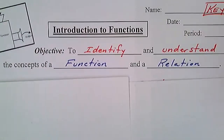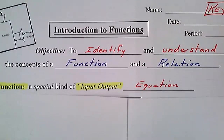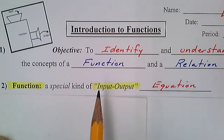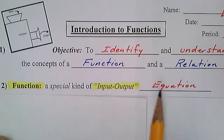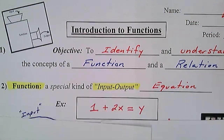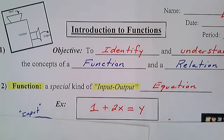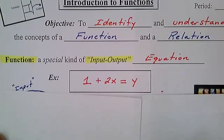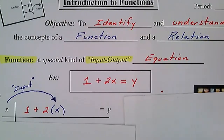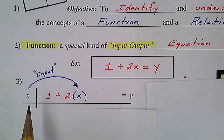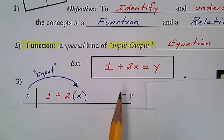A function is just a special kind of input-output equation. We've already been learning about input-output equations, so that's what a function is. Here's a simple example — we have an upfront amount, a rate, and then our output. Here's our linear equation with two variables. We're going to put it into an input-output chart. This is our x values — we plug numbers in as input and we get an output.